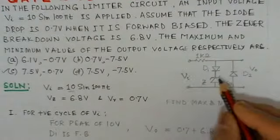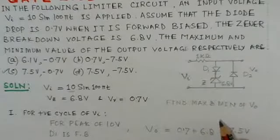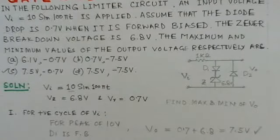So the total drop would be 7.5 volts when the positive cycle of the input comes. So the drop here would be 7.5 volts.